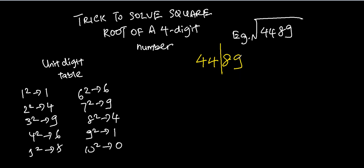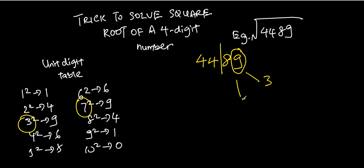The second step is to focus on the last digit of the four-digit number and tally it with the unique-digit table to determine the last digit of the answer. So in this case, we tally the 9 with the right-hand side of the table. We can see there are two options: 3 and 7, because the last digit of 7 squared is 9 and the last digit of 3 squared is 9.